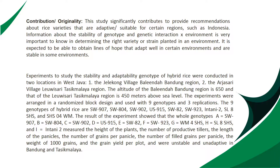The results of the experiment showed that the whole genotypes — A equals SW907, B equals SW804, C equals SW902, D equals US915, E equals SW82, F equals SW923, G equals WM4-SHS, H equals SL8-SHS, and I equals NTAN-E2 — measured for plant height, number of productive tillers, panicle length, number of grains per panicle, number of filled grains per panicle, weight of 1,000 grains, and grain yield per plot, were unstable and unadaptive in Banjung and Tasik Malaya.